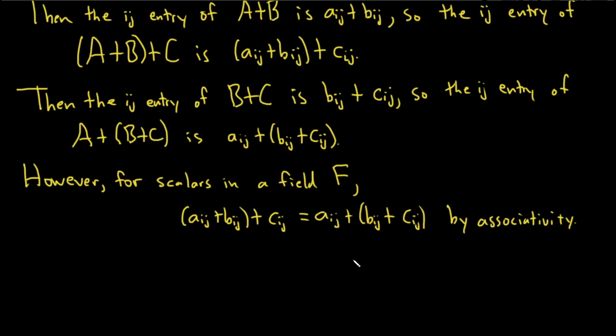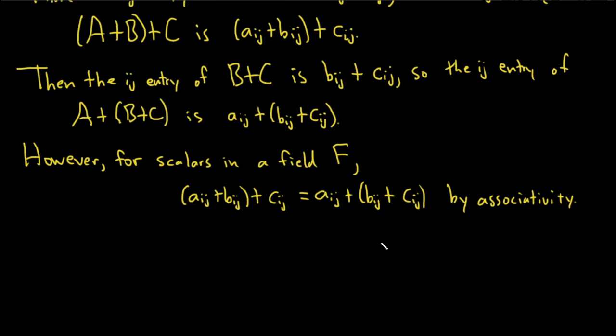So by associativity of the elements, they are the same. So basically we have showed that, so thus, thus (A+B)+C and A+(B+C) have identical ij entries.